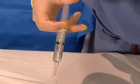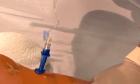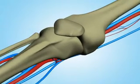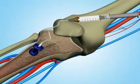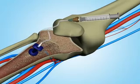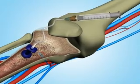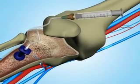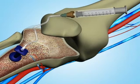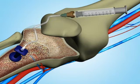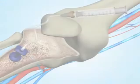Intraosseous administration of fluid and medications is possible since there are connections between the marrow cavity within bones and the systemic venous circulation. The cortex overlying the metaphysis of long bones is relatively thin and easy to penetrate. The underlying cancellous bone drains through venous sinusoids into nutrient vessels and emissary veins into the systemic venous circulation. Cannulation anywhere within the non-collapsible medullary cavity provides a reliable means of infusing medications or fluids into the systemic venous circulation.